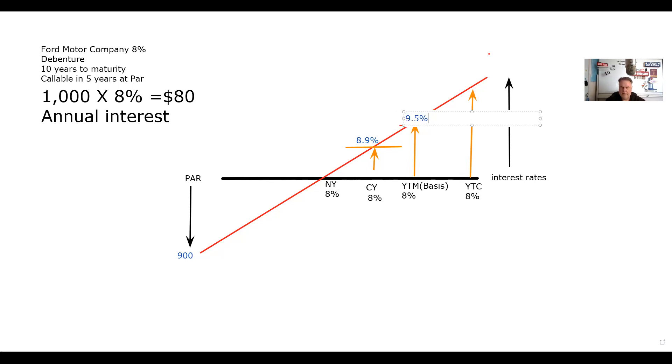The only math that you're going to have to be able to do is the current yield. And we said current yield is what the investment pays you divided by what it costs you. So I take 80 divided by 900 and we get 8.88, I'll call it 8.9. So we know that the yield to maturity is going to be higher than 8.9. And in fact, if we did the math, we'd find out that that's 9.5, 9.47. The point is not that that number, it's where are these numbers in relationship with each other?